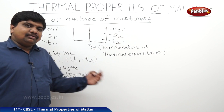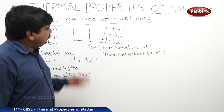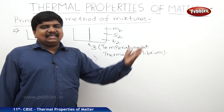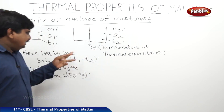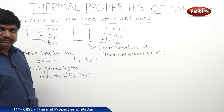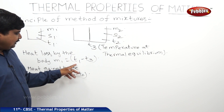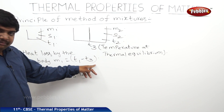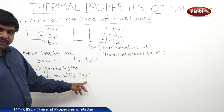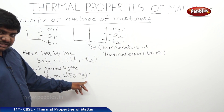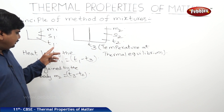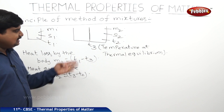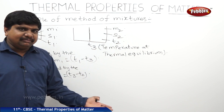We know that the amount of heat energy is Q = MsΔT, where ΔT is the temperature difference. So for body M1, heat lost is M1·S1·(T1 − T3), and for body M2, heat gained is M2·S2·(T3 − T2). Therefore, heat lost is equal to heat gained.